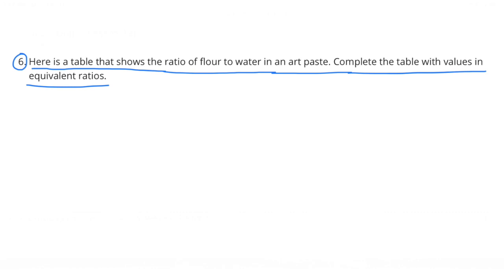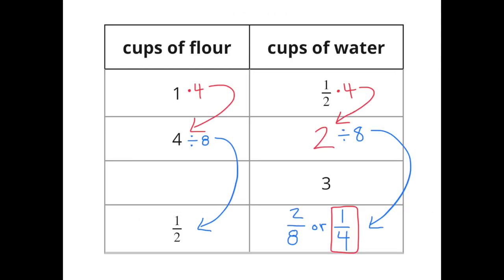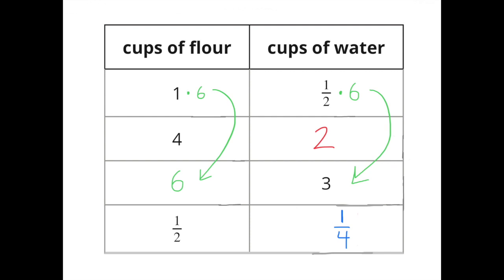Number six: Complete the table showing the ratio of flour to water in an art paste. In the left column, one was multiplied by four to get four, so on the right I multiplied one-half by four to get two. Then four divided by eight gives one-half on the left, so two divided by eight gives one-fourth on the right. Finally, one-half times six equals three on the right, and one times six equals six on the left.